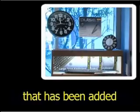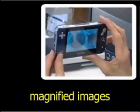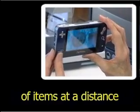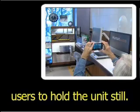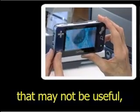One additional feature that has been added to some models is distance viewing. When viewing highly magnified images of items at a distance, it can be difficult for some users to hold the unit still. This can result in a shaky image that may not be useful.